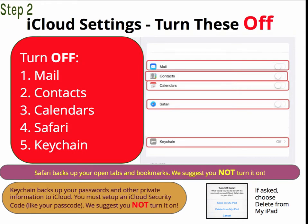In iCloud Settings, you should turn these off: Mail, Contacts, Calendar — those are all handled by Exchange, so you don't need them being backed up to iCloud. Also turn off Safari and Keychain. Safari backs up your open tabs and bookmarks — you could do this, but for now we suggest that you not. Keychain backs up your passwords and other private information; in order to do that you have to set up an iCloud security code and have an iCloud email address. We suggest that you not turn that on.